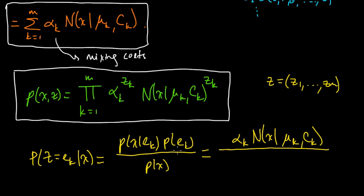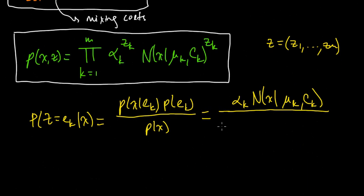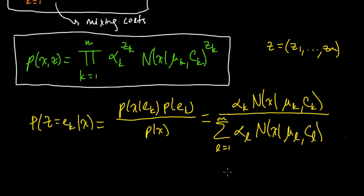And then in the denominator, this is just the marginal distribution on X, which we already, right? That was this thing. The marginal distribution on X was just that. So we can just put that down here. Sum over L from 1 to M of... I'll use L instead of K since I already used K. L from 1 to M of alpha L times the normal density with mean mu L and covariance CL.